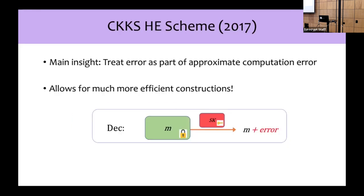CKKS homomorphic encryption inherits many properties of BGV but has the clever idea of mimicking fixed-point arithmetic directly. Since fixed-point arithmetic is inherently noisy, the LWE error present in FHE schemes can be added to the approximate arithmetic error and only affects the least significant bits of the message. It can be shown that CKKS can perform approximate arithmetic homomorphically with only one additional bit of precision loss over plaintext fixed-point arithmetic.